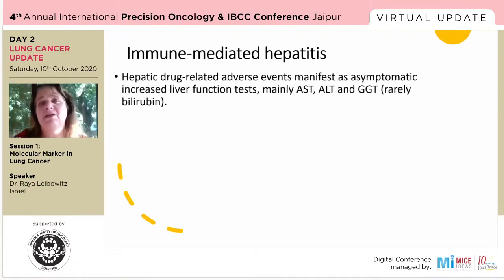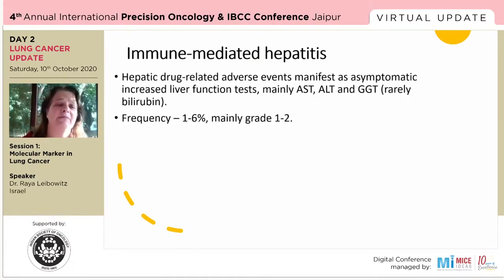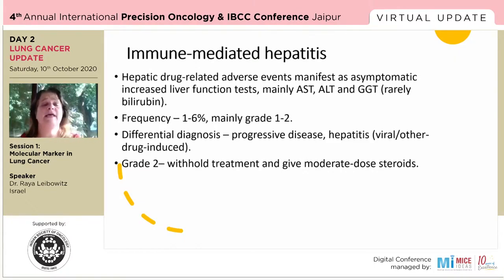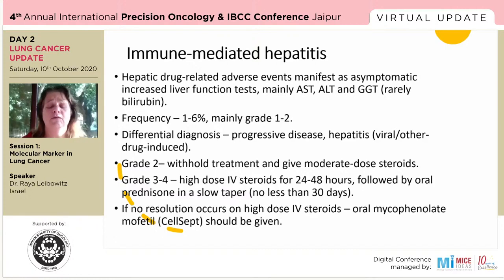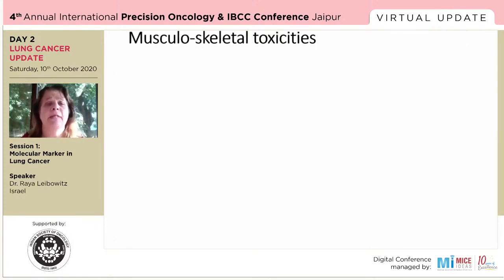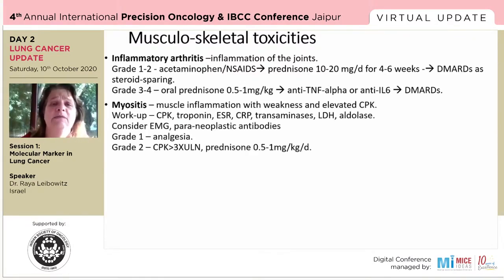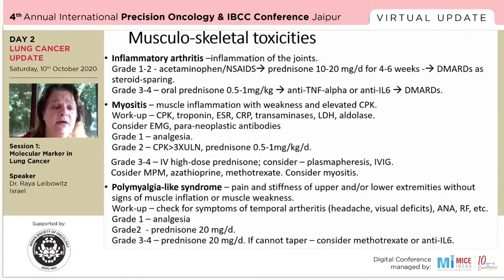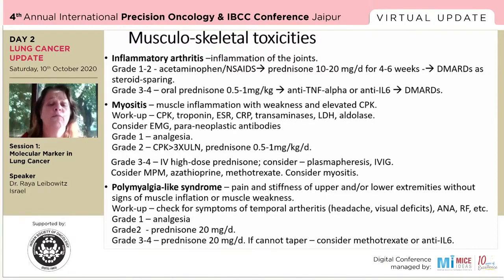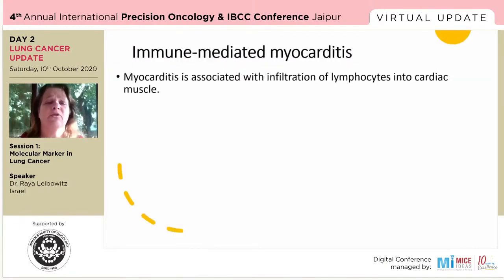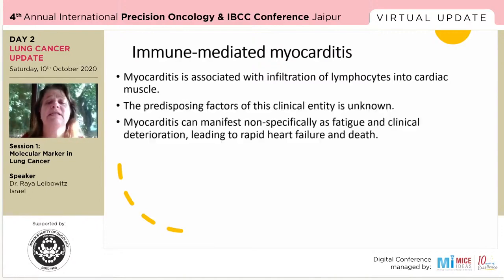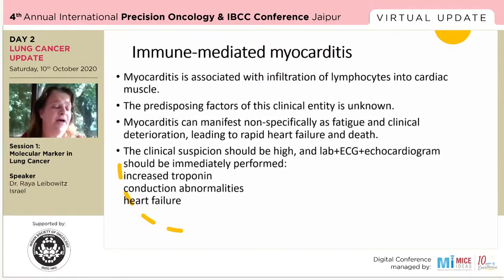Immune-mediated hepatitis mostly manifests as asymptomatic elevation in liver function tests — mainly AST, ALT, and GGT. We must do differential diagnosis including progressive disease or other hepatitis causes. Treatment is steroids, and if no resolution, we move to other immunosuppressants. There are also musculoskeletal toxicities: arthritis, myositis, and a polymyalgia-like syndrome with pain and stiffness of upper and lower extremities without signs of muscle inflammation or weakness. Importantly, immune-mediated myocarditis — lymphocyte infiltration into cardiac muscle — is a medical emergency that can be fatal and requires high clinical suspicion.